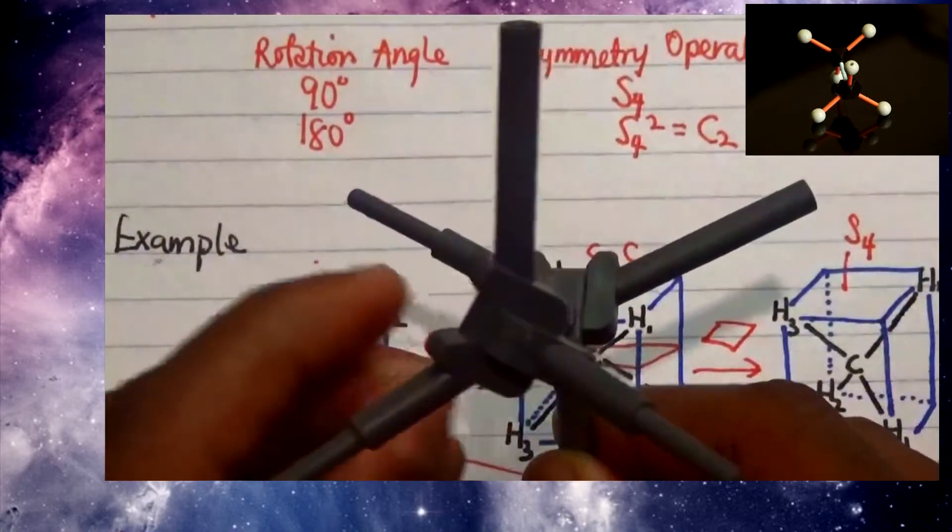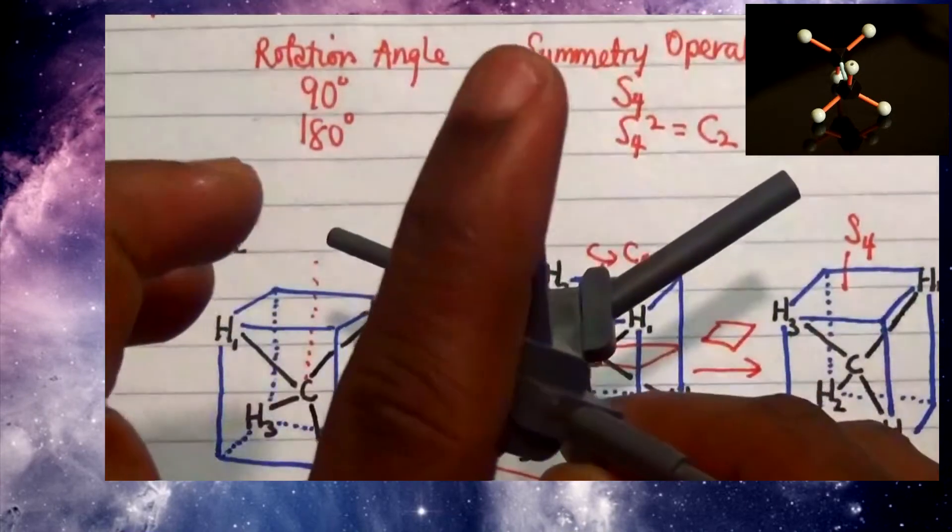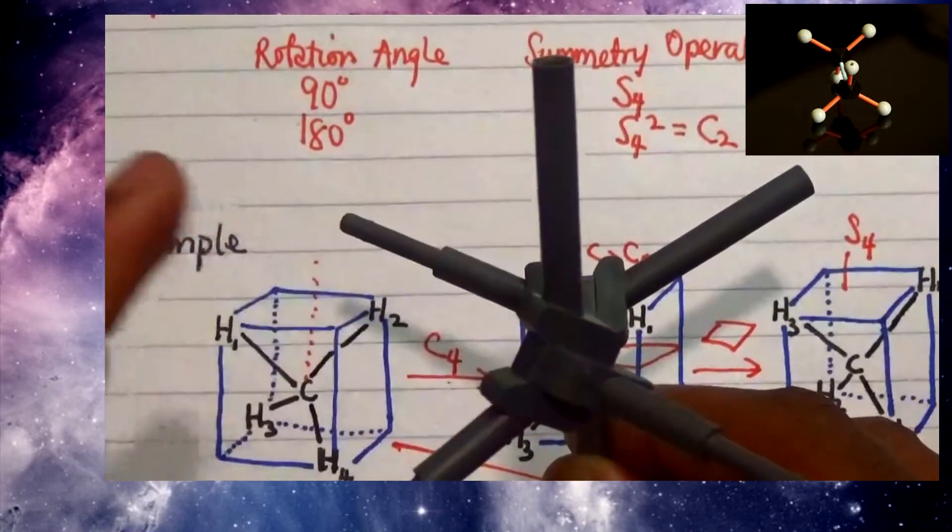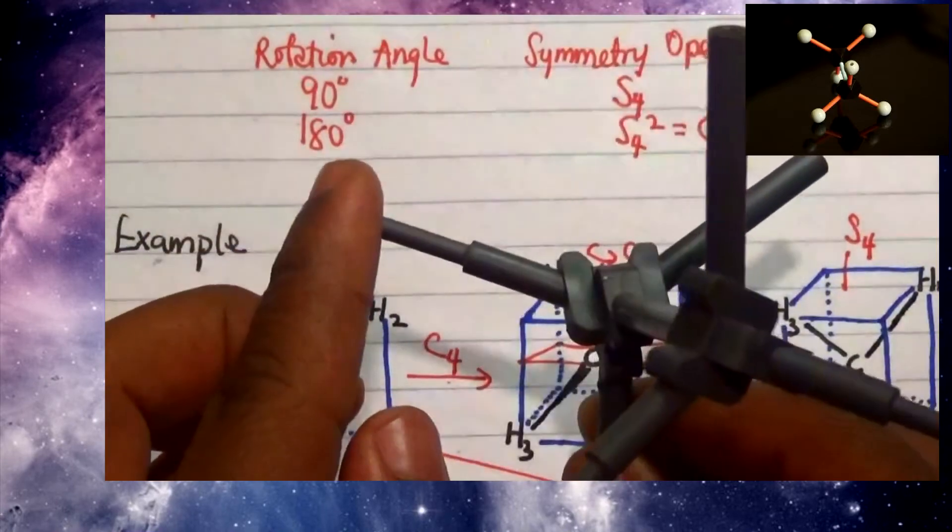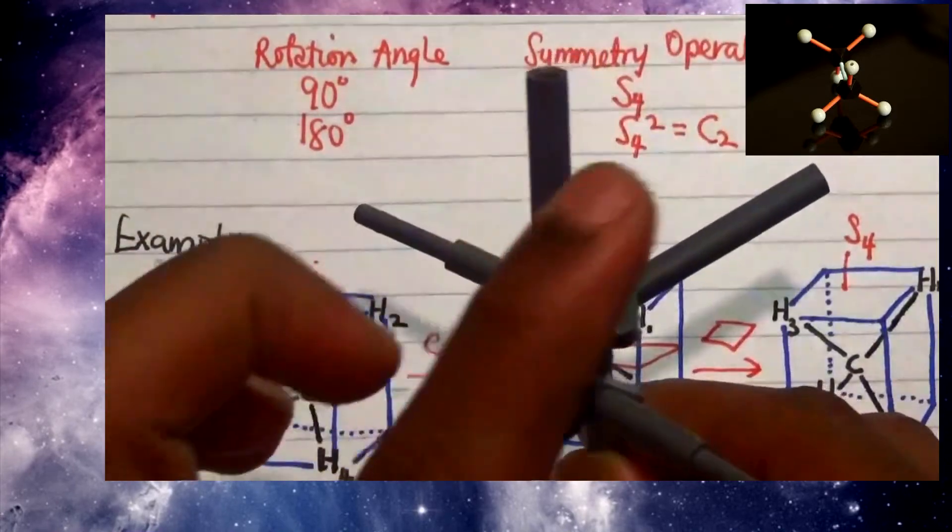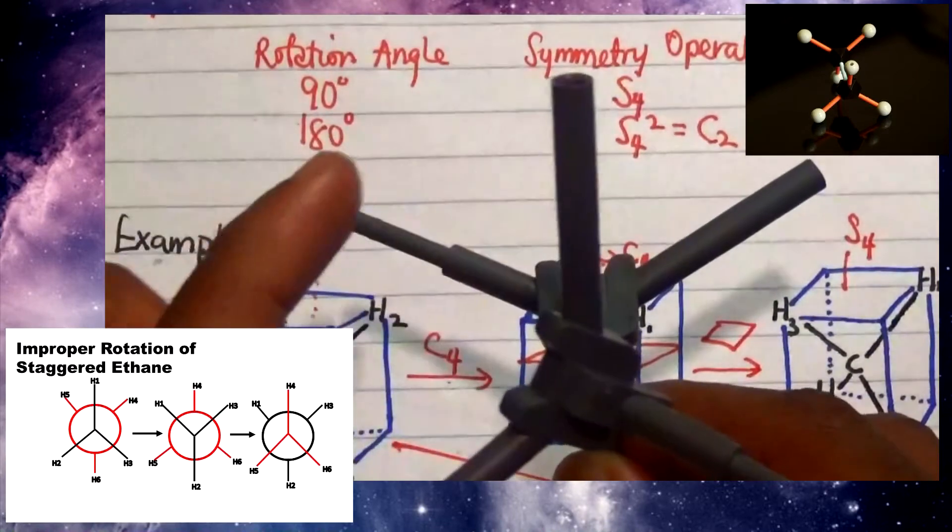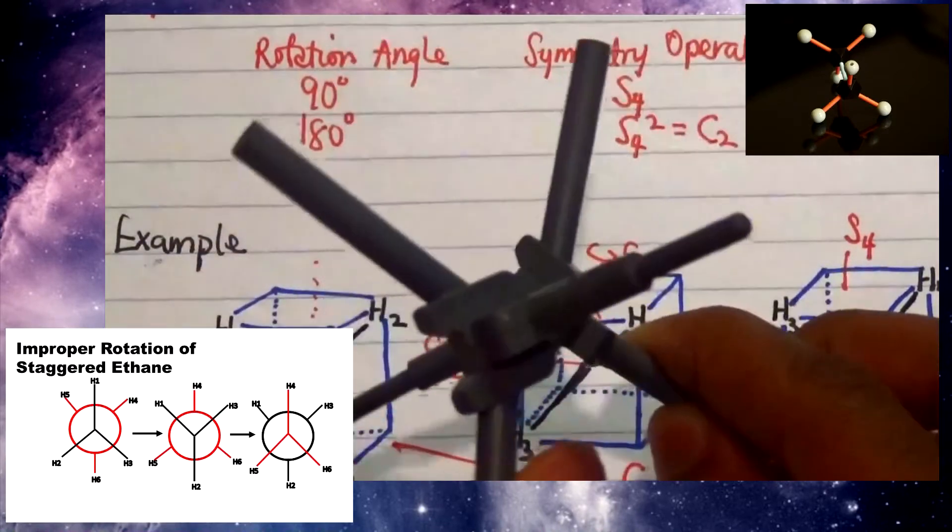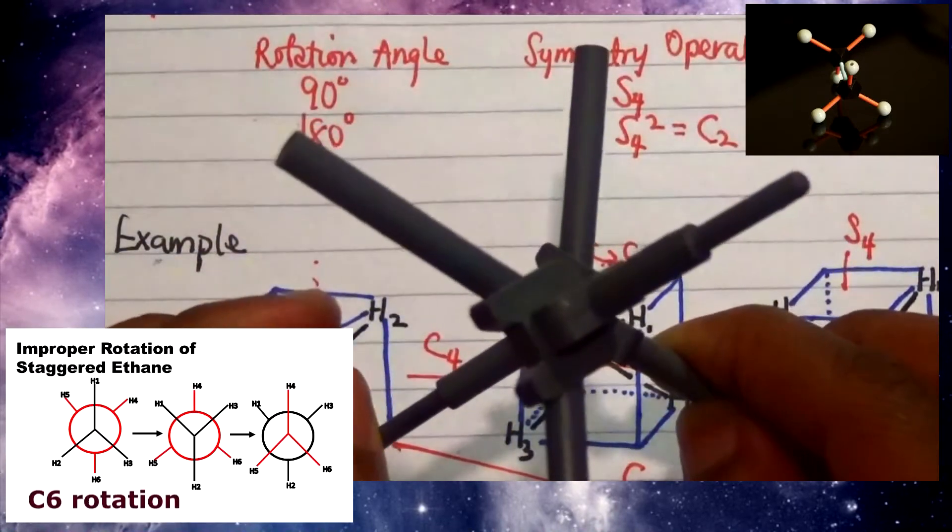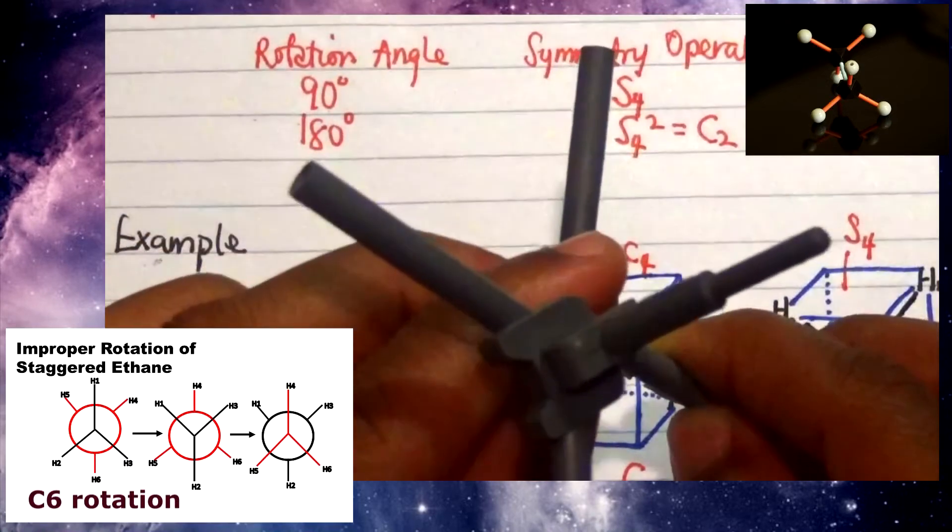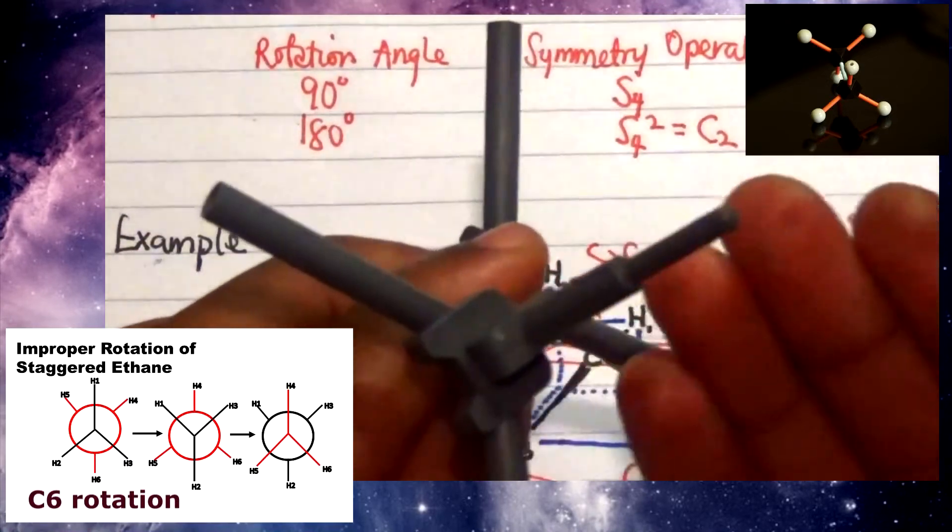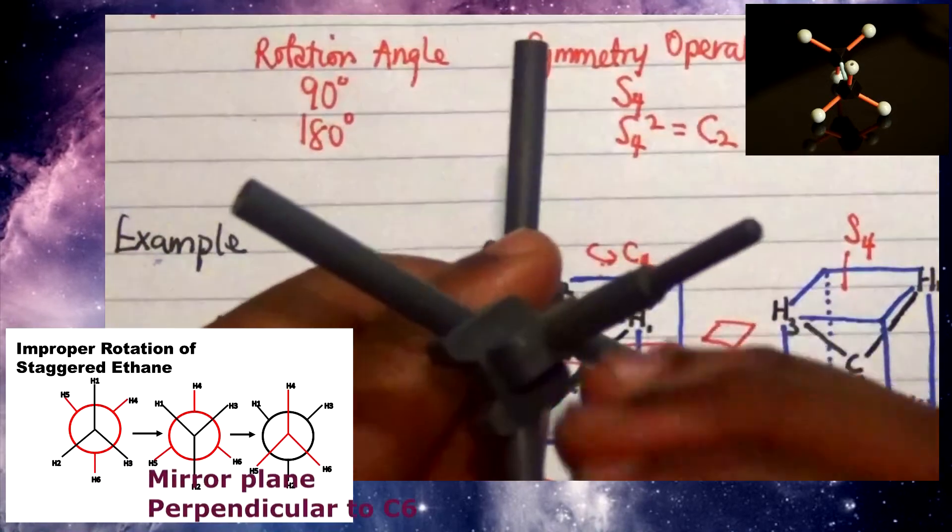If I look at this staggered ethane, the angle between this particular hydrogen bonding with the carbon and this hydrogen at the end here bonding with this carbon is actually 60 degrees apart. And then if I perform a rotation which is a C6 rotation and then I do a mirror—apply a mirror plane—what I realize is that...